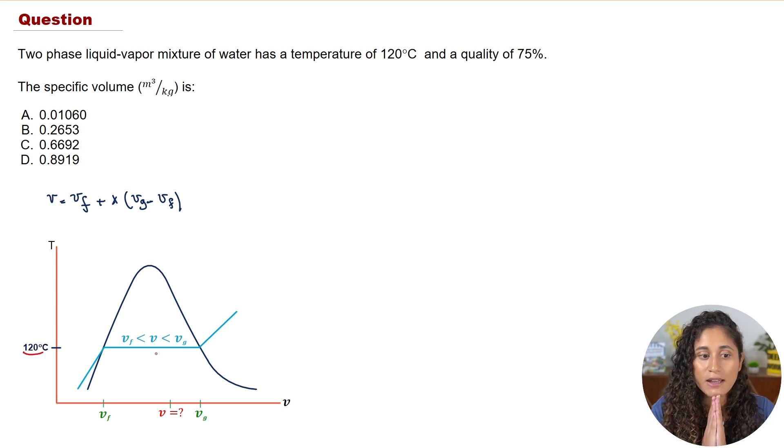Now at this point here this is the specific volume of the saturated liquid, so f is for liquid and here it's for vapor. What we're trying to do is determine the specific volume that belongs to a quality of 75 percent. What does quality mean? Quality just really tells us how much of the water has vaporized, or how much vapor do we have in the mixture of liquid and vapor. In this problem we have 75 percent of vapor, so we're just trying to determine what is the specific volume when we have a quality of 75 percent.